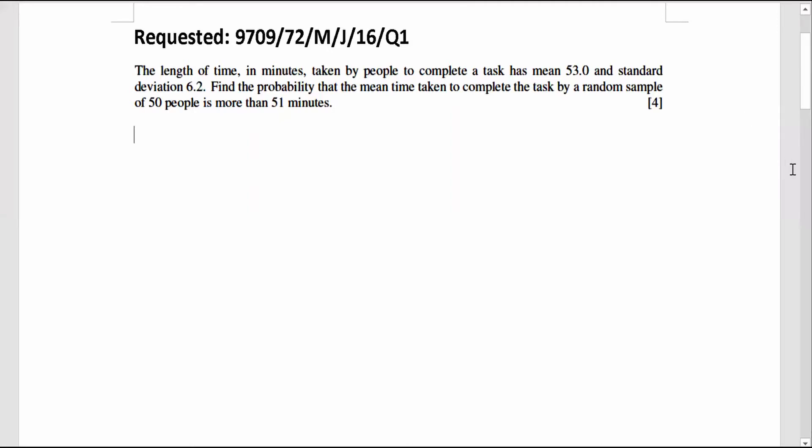Hi, this is the requested video. The question is from May-June 2016, Variant 7-2, Question 1. The length of time in minutes taken by people to complete a task has mean 53.0 and standard deviation 6.2. Find the probability that the mean time taken to complete the task by a random sample of 50 people is more than 51 minutes.